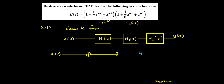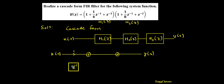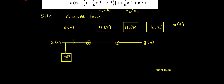Here I am going to have the output y of n. Now for the term 1 plus 1/4 z-inverse, I take the input x of n — this is the coefficient 1. For 1/4 z-inverse I should have a delay element. So I consider a delay element, and after the delay I get x of n minus 1, which gets multiplied with 1/4.